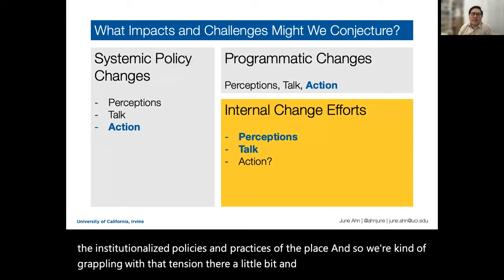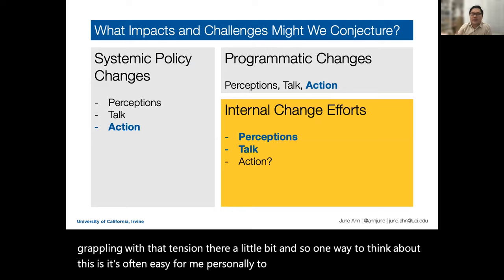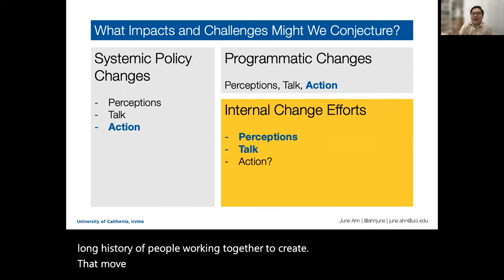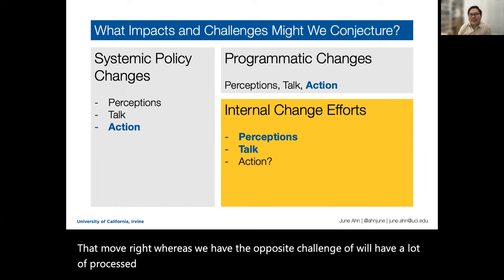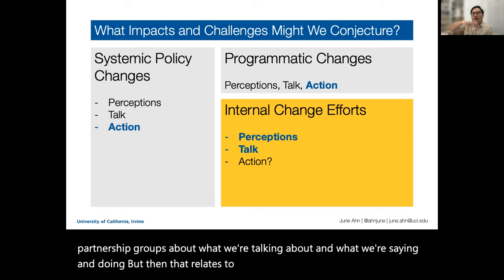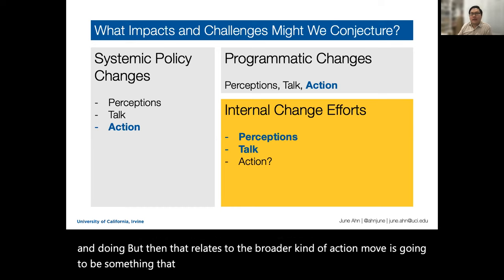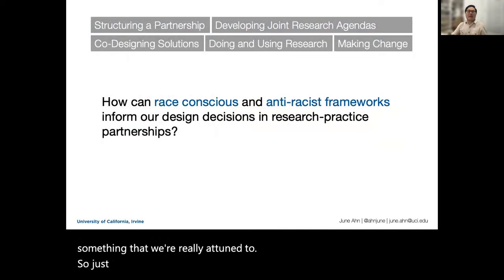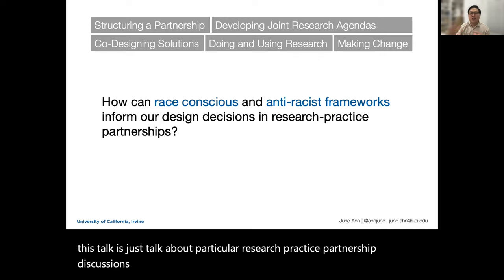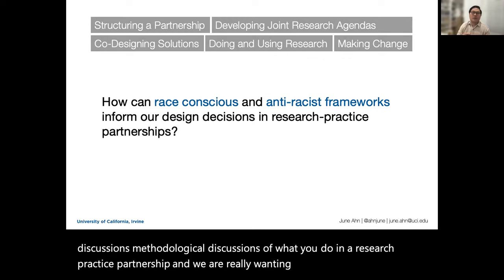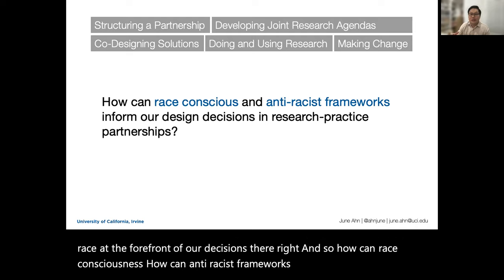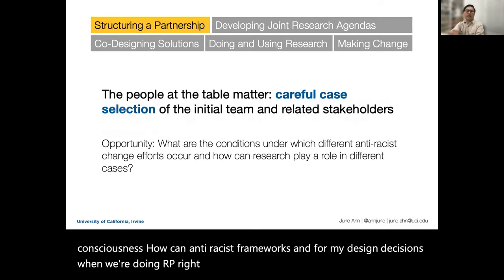In the second half of this talk, I want to discuss particular research practice partnership methodological discussions about what you do in a partnership, and we are really wanting to push on how we put race at the forefront of those decisions. How can race consciousness and anti-racist frameworks inform our design decisions when doing RPP? Since we just began, we're really in that structuring and developing phase. One thing in the beginning when structuring a partnership: it's a conscious decision of a small group of people deciding to work together, and we've been really attending carefully to who are the people coming to the table — including ourselves, our racial histories, our backgrounds, and our partners.